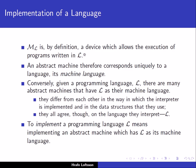The other example that we mentioned was the hardware machine. In that case, the language was the machine language of the hardware machine, and the hardware machine is a device which allows the execution of programs written in this machine language. So an abstract machine corresponds uniquely to a language — its machine language.